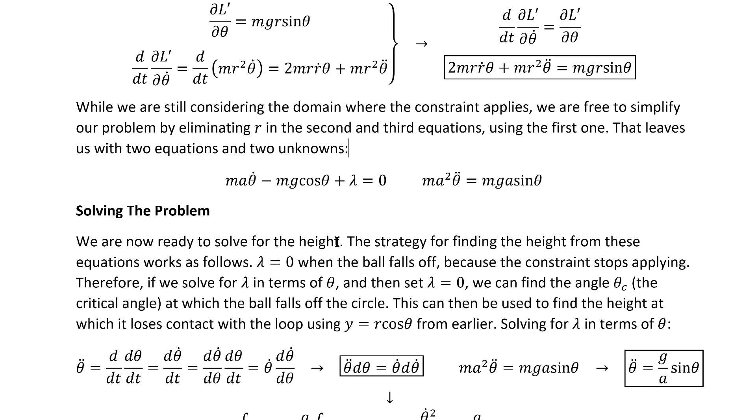The strategy for finding the height from these equations works as follows. Lambda is zero when the ball falls off because the constraint stops applying. Therefore, if we solve for lambda in terms of theta, which we do instead of theta in terms of lambda because it happens to be algebraically easier in this case, as you'll see, then set lambda equal to zero, we can then solve for theta_c, the critical angle at which the ball falls off the circle. This can then be inserted back into this formula for y to get the height.